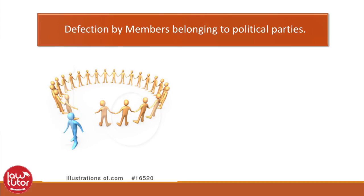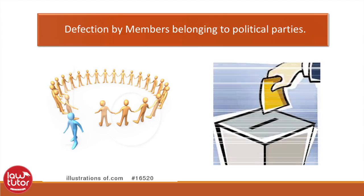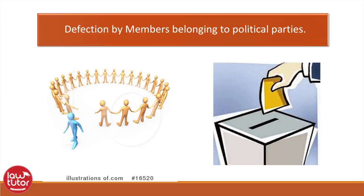Also, if the member of a political party votes against a direction given by the political party, he is said to have defected. If the member who has voted against the direction has taken permission from the party to vote against it, or the party condones the member's vote within 15 days, then he has not defected.